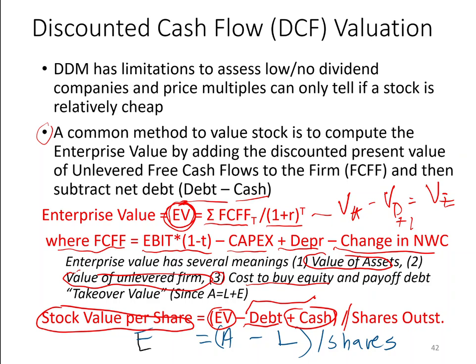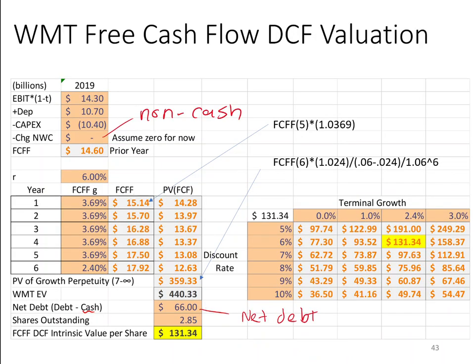We're going to take this model of Walmart. In 2019, Walmart had $14.3 billion of after-tax EBIT, $10.7 billion of depreciation, and $10.4 billion of CapEx. Notice how these numbers are very close — Walmart is growing relatively slowly, basically just replacing assets that are wearing out. Depreciation measures how assets run out, and CapEx is just replacing them — like buying a new delivery van once the old one wears out.